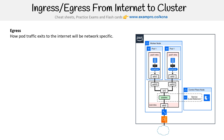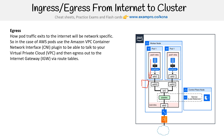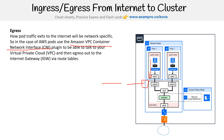Egress is how pod traffic exits to the internet. You have a pod with a container, it flows out and leaves the pod. What it would do is go through the container networking interface. Kubelet talks to the container runtime, and you would have the CNI plugin — in AWS's case, it's the Amazon VPC container networking interface. That lets you talk to the VPC, and from the VPC you can then talk to AWS's internet gateway, and that's how you get out to the internet.